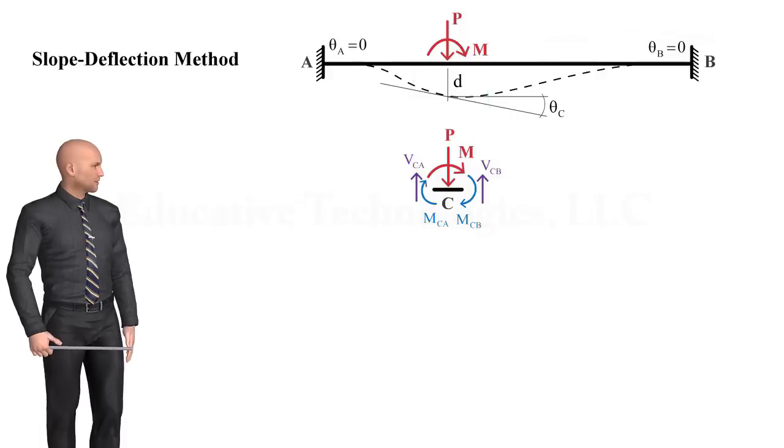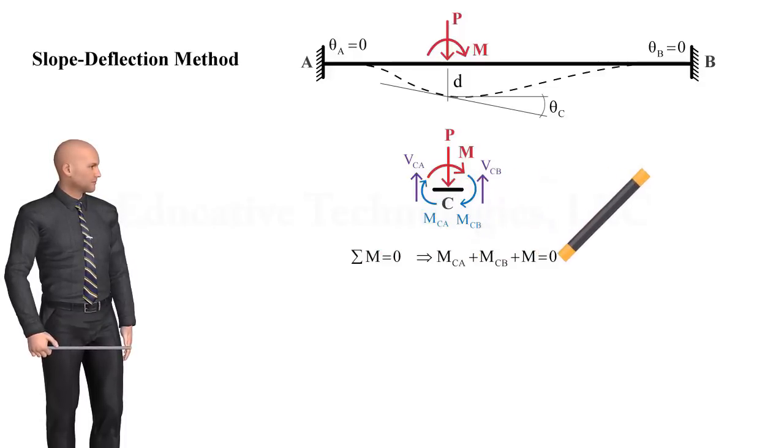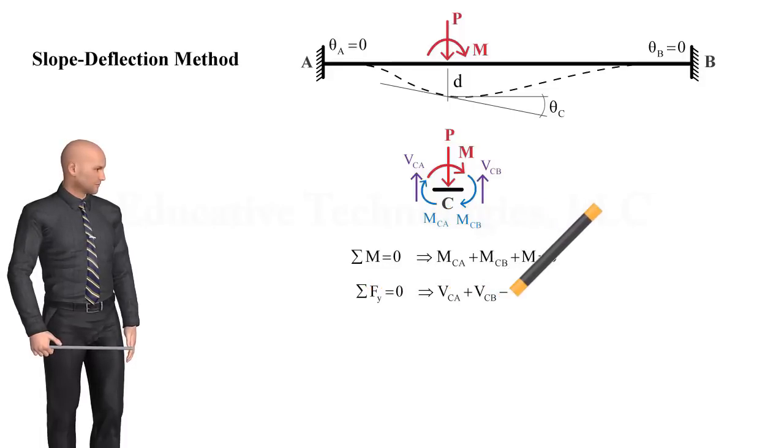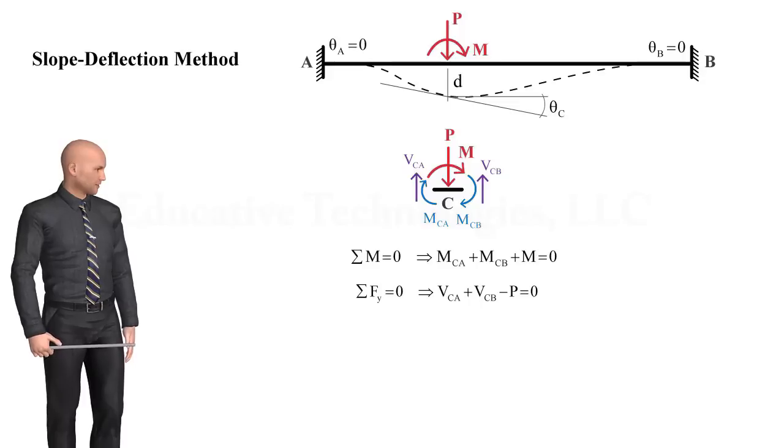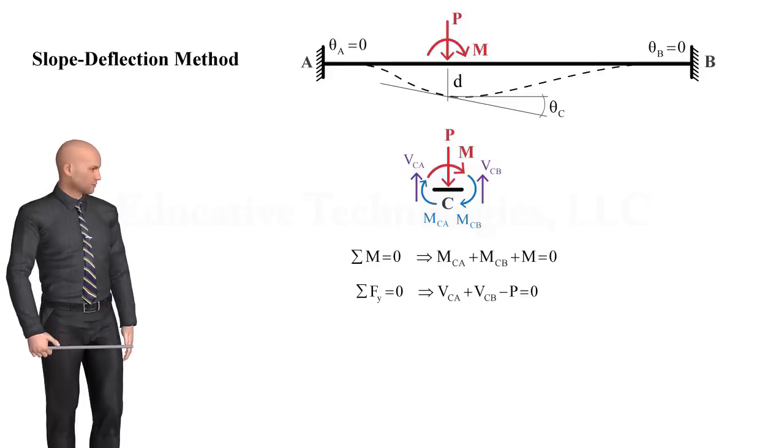Since it needs to be in the state of equilibrium, the sum of the bending moments acting at the joint must be 0. Also, the joint's vertical forces must add up to 0. Using the equations for VCA and VCB that we wrote previously, we can rewrite the second equilibrium equation in terms of the member-end moments, like this.